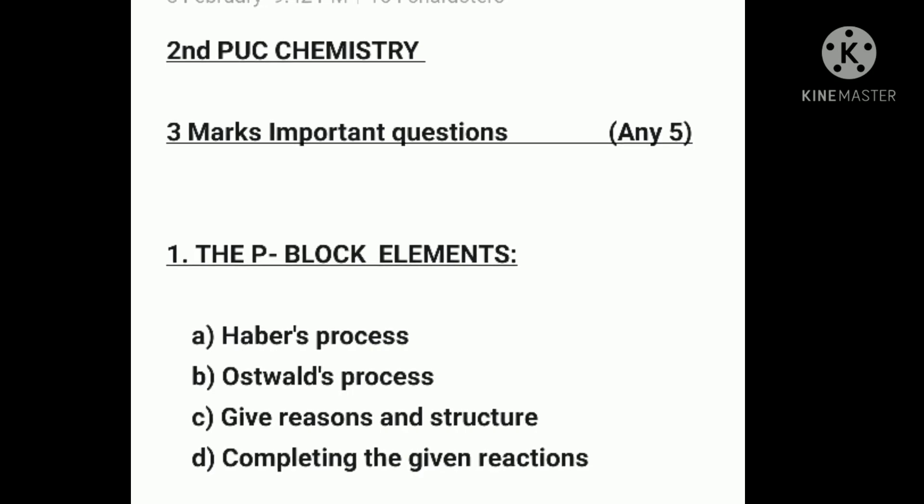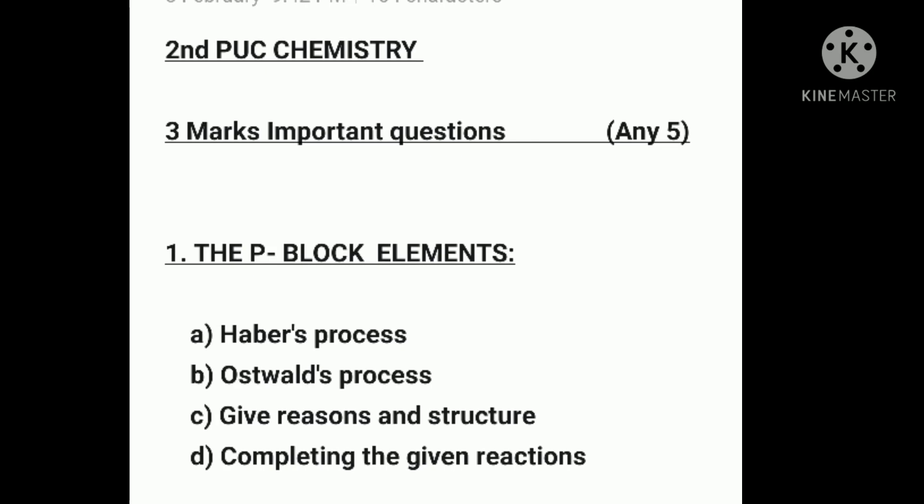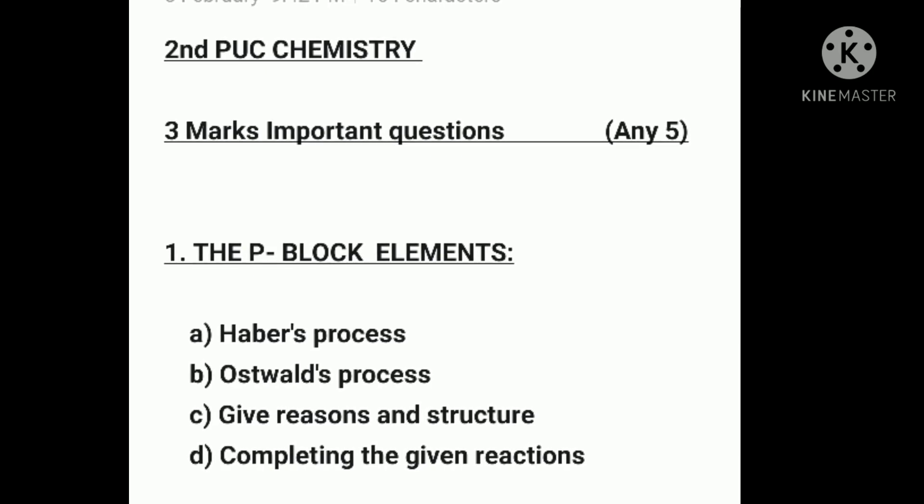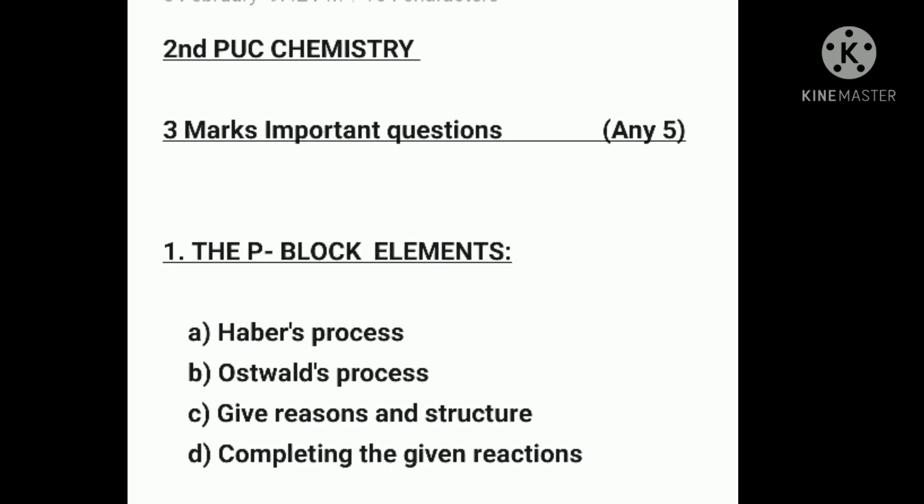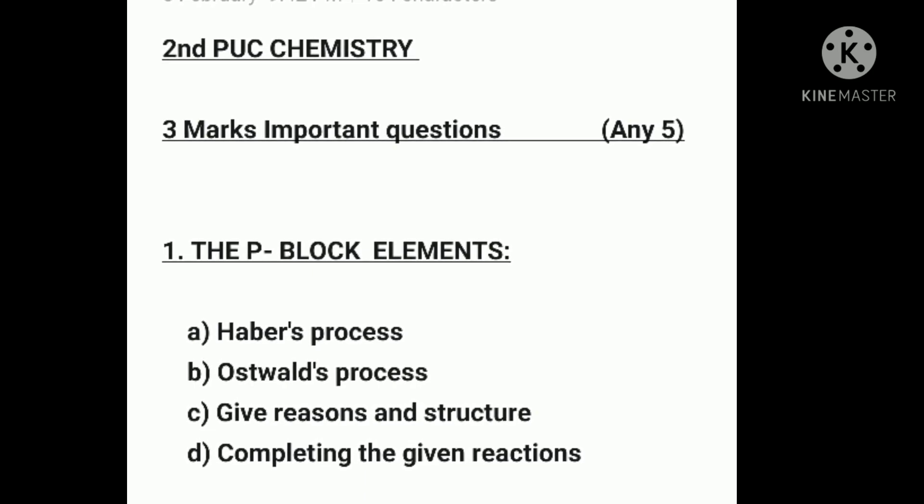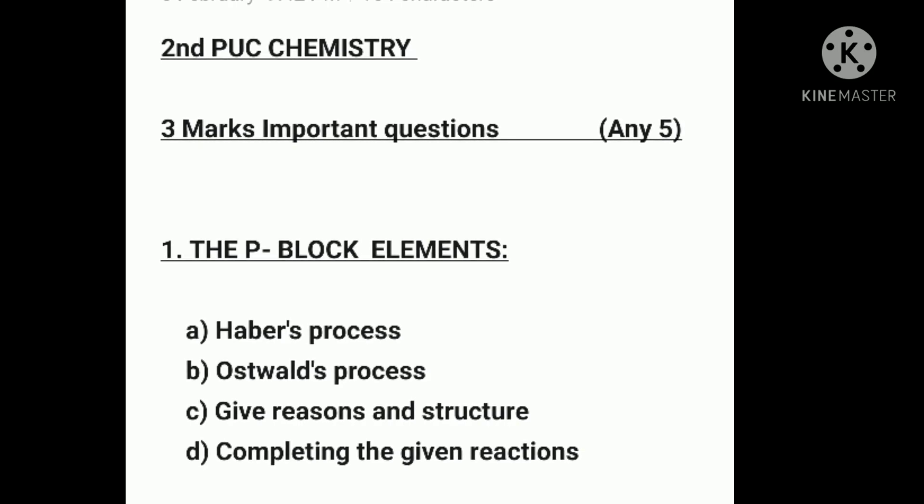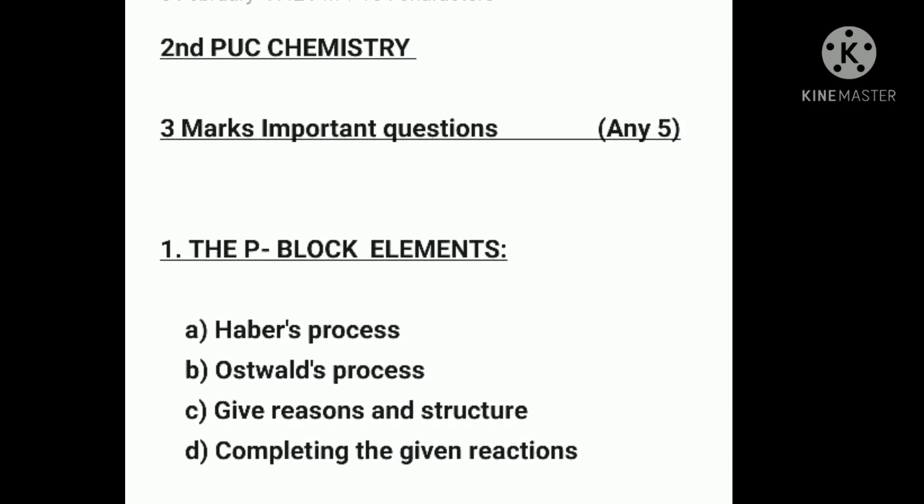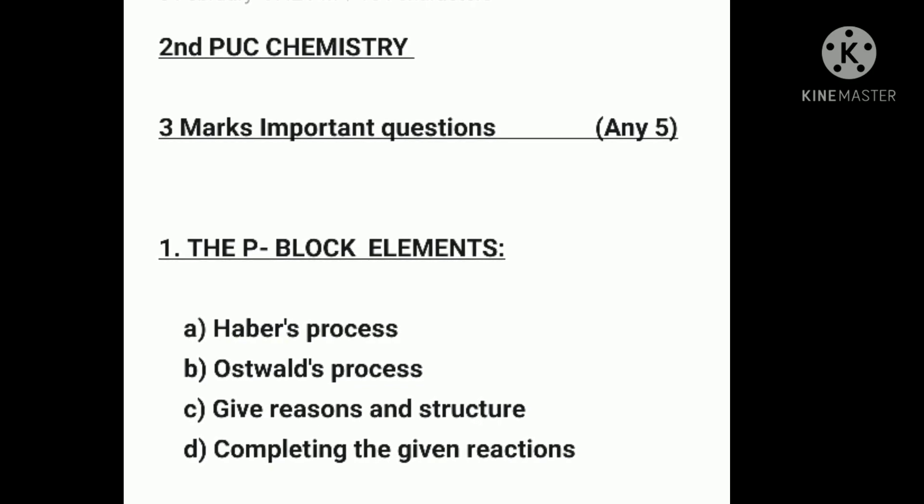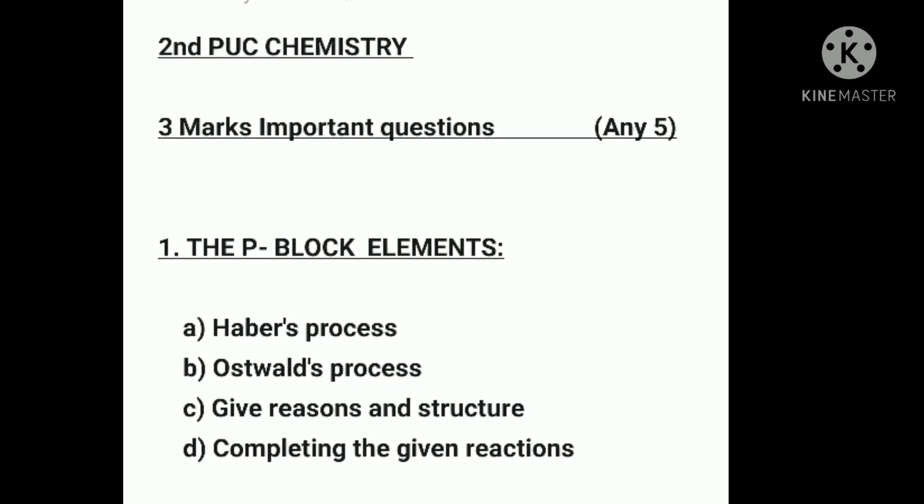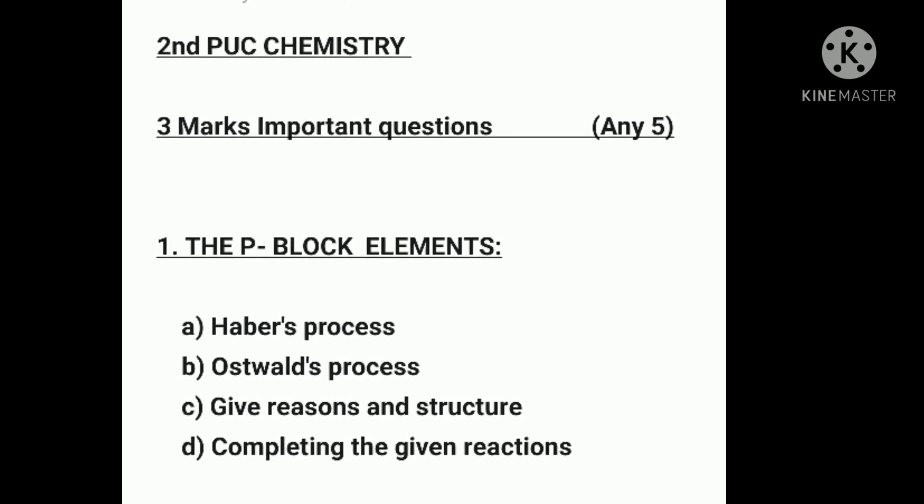Second PUC Chemistry three mark important questions from the chapter The P-Block Elements are: Haber's process, Ostwald's process, give reasons and structure, and completing the given reaction. In this, they will give half reaction, you have to complete that given reaction.